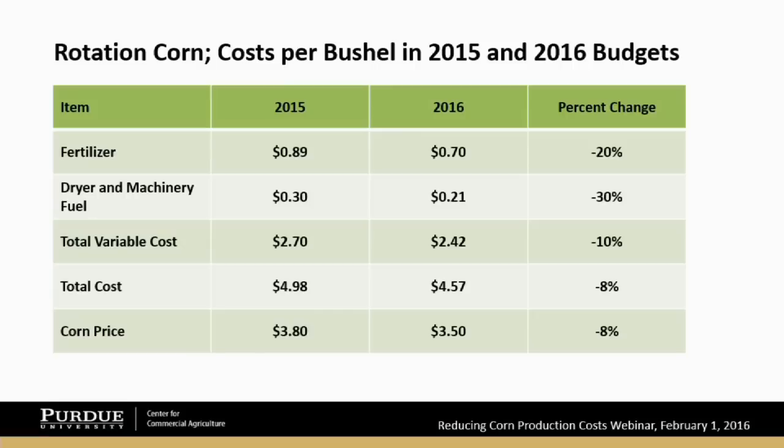On a total cost basis, which includes cash rent, operator labor, and machinery ownership costs, the break-even price on average productivity ground in our budgets has dropped from $4.98 to closer to $4.50. That's very positive, but $4.50 is still a fairly high break-even. Is there anything else we can look at from a seeding rate or nitrogen application standpoint that would help reduce costs even more?